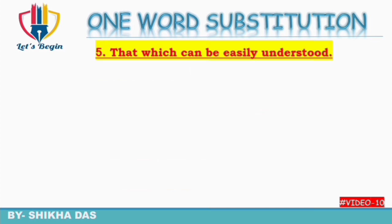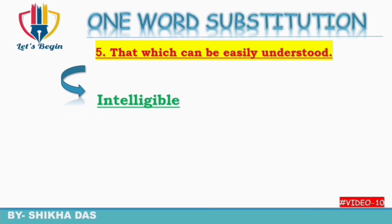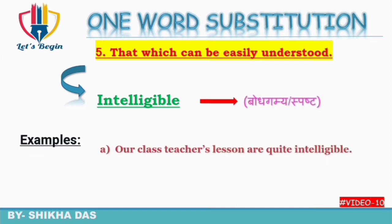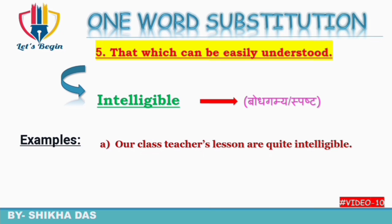Next: that which can be easily understood — jisko asani se samjha ja sake. Isko one word mein kehte hain 'intelligible'. Isko 'intelligent' se relate karke yaad kar sakte hain — intelligent matlab jo asani se samajh leta hai, aur intelligible matlab jis cheez ko asani se samjha ja sakta hai. Hindi mein kehenge 'bodhgamya' ya 'spasht'. Example: 'Our class teacher's lessons are quite intelligible.'